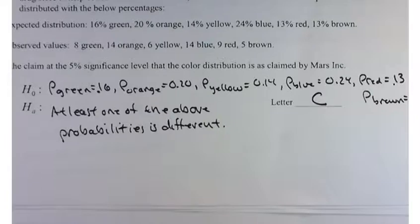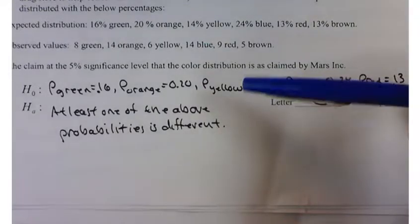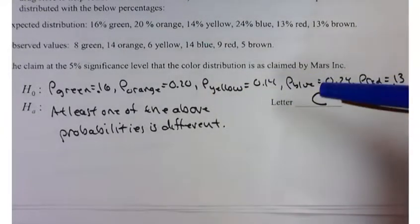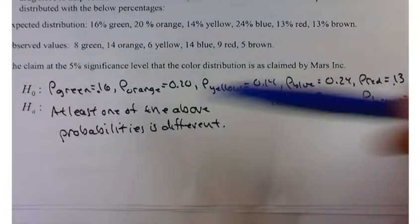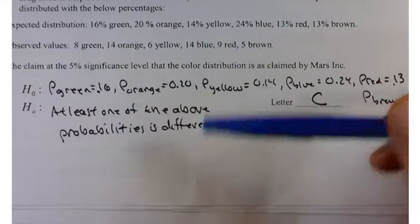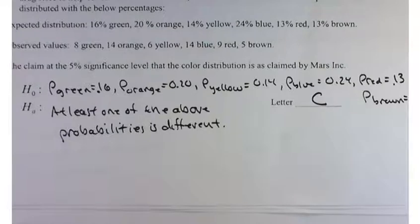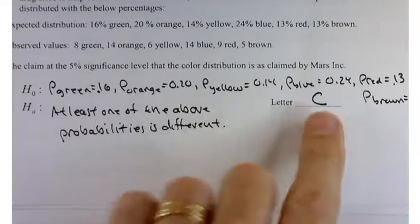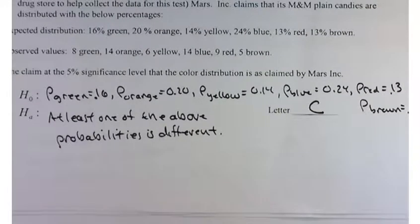Or that you state that the observed frequencies match the expected frequencies, and then the alternative would be that they don't. That's a chi-squared goodness of fit test. Do your observed values match the expected values?